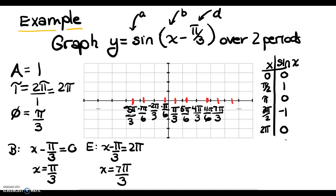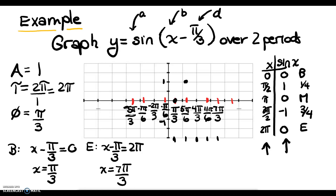Our amplitude is 1, so I label 1 and negative 1 on the y-axis. When you plug in the beginning and all quartile marks, you get the key x-column values, which makes graphing easy. At the beginning, sine is on the x-axis. At the quarter mark, it's up at 1. At the halfway mark, it's on the x-axis again. At the three-quarter mark, it's down at negative 1. At the end, it's back at 0. That's what our graph looks like.